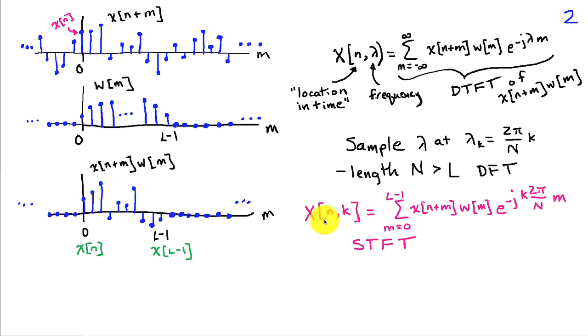So that gives us what we call the short time Fourier transform: x of n comma k, at reference time n and frequency k, is the DFT of x of n plus m times a window w of m. This involves x of n, x of n plus 1, through x of n plus l minus 1. By changing n, we're changing the segment of the data that we're looking at.